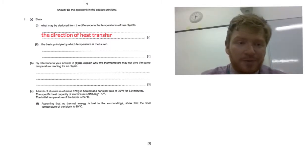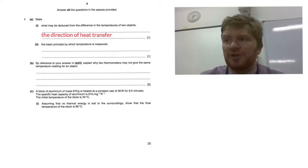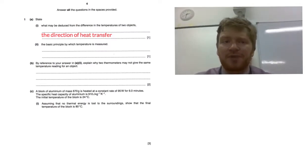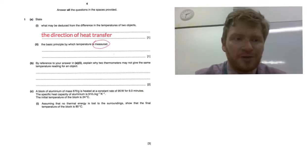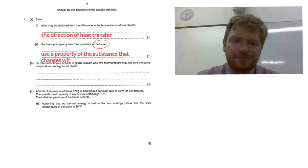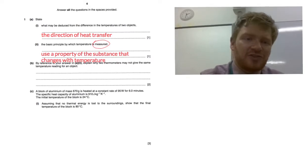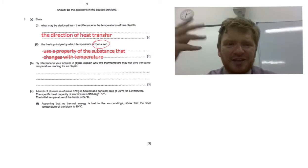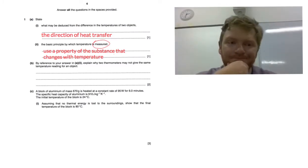And then they state the basic principle by which temperature is measured. Again, quite a subtly worded question there. They're not saying what is temperature, they're saying what's the principle that we use to measure it. And again, that's quite mean, because what I think I would probably think about initially is saying something to do with the average kinetic energy of the particles. But it's saying the principle by which it's measured.